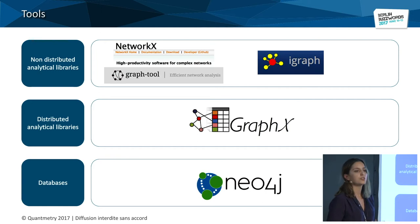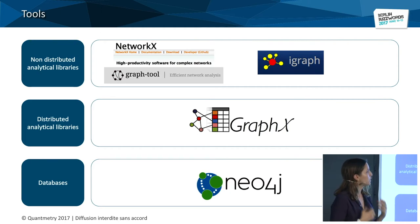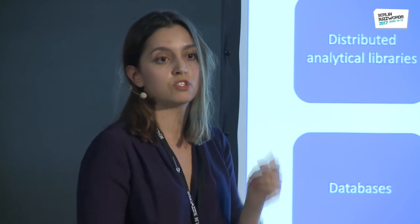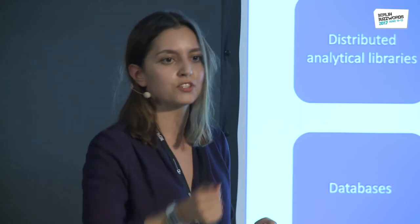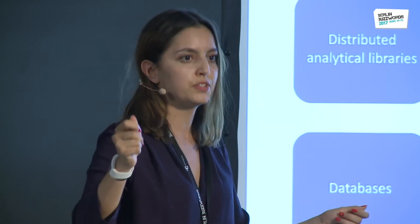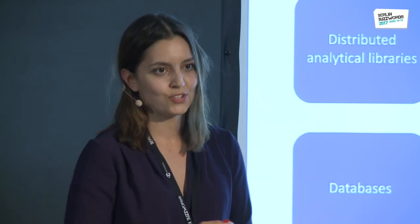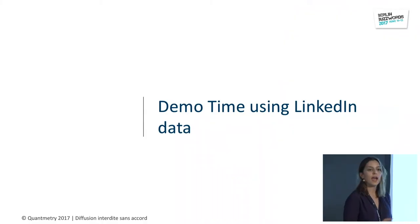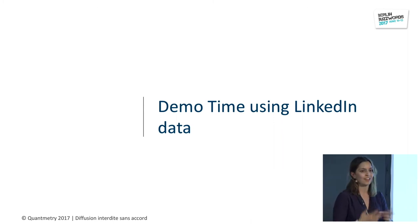Finally, you might also consider using a graph database. Neo4j is currently the reference — it's extremely good for finding the shortest path and computing the degree of a node. But it really depends on your use case: if you just want to select nodes with a given degree or specific properties, it might not be the best option, but if you have a best-route use case, it's something you should really consider. Now we have a small demo using LinkedIn data and the iGraph library, where we'll show you how to load graph data, make summary statistics, find communities, and compute metrics to analyze the network.